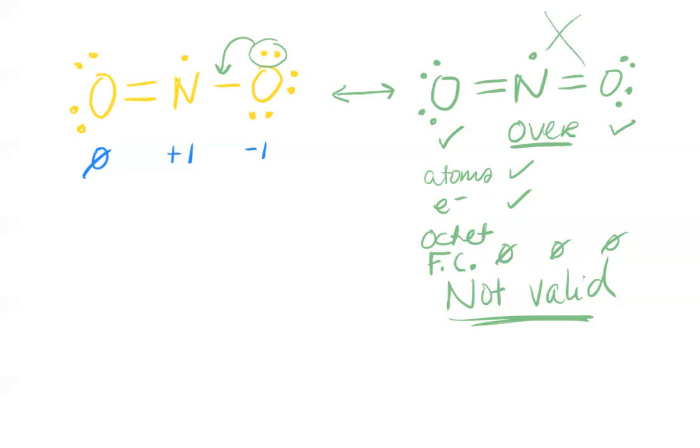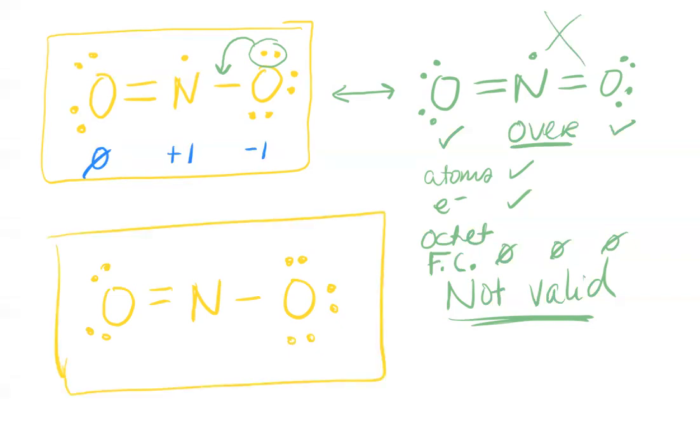So the best structure that we can draw for this molecule is that right there. Let me draw it again so there's no arrows around it. This is the absolute best structure that I can draw. I've got the right number of atoms, the right number of electrons. My octets are good even though this one is low, and formal charges are as small as they can be - zero, plus one, and minus one. So hopefully that helps.